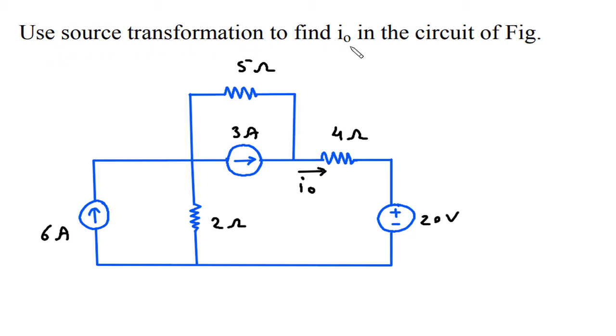Use source transformation to find I O in the circuit of figure. We have to find this I O in this circuit using source transformation solution. First of all we will redraw the circuit.